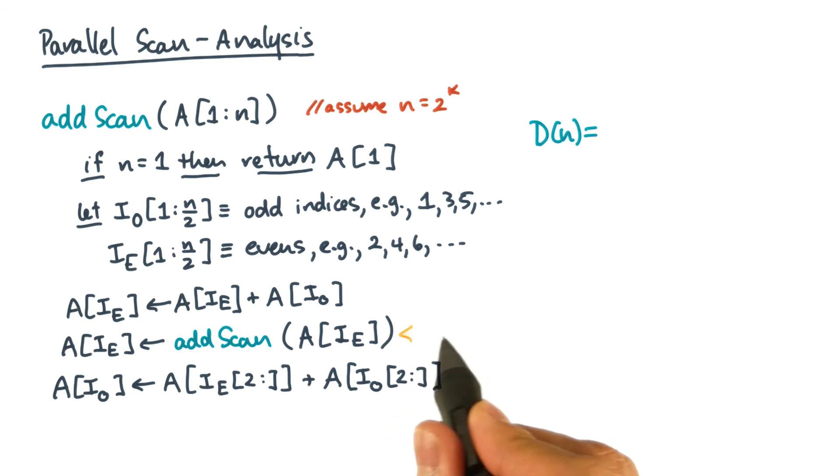Now the first observation is the recursive call, which always operates on a subproblem of half the size. So, you'd naturally expect about O of log n levels.